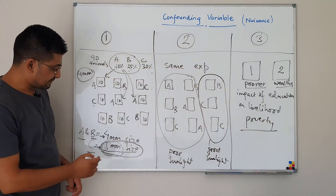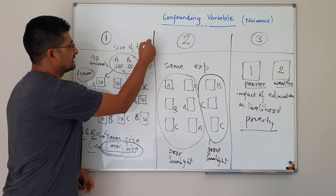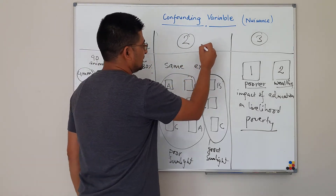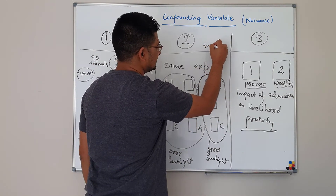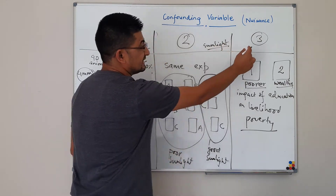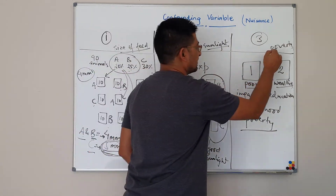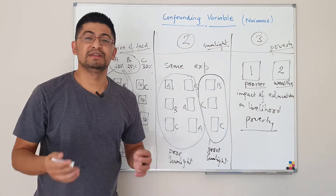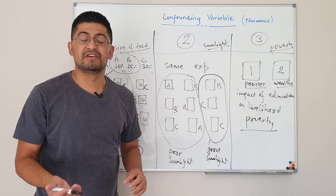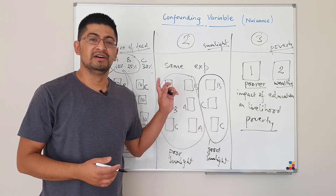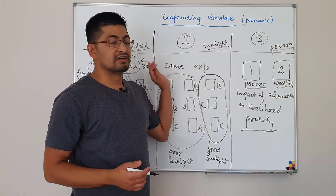To summarize the three examples: in example one, the feed particle size is the confounding variable; in example two, sunlight or housing environment is the confounding variable; and in example three, poverty is the confounding variable. These are three examples illustrating what a confounding variable means — it creates noise in your research study. Now I will show you how to manage these confounding variables.